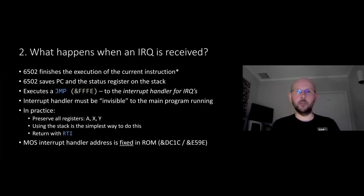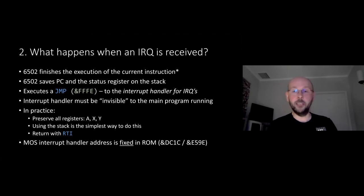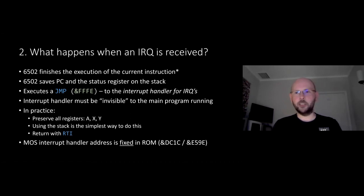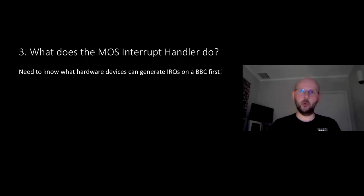FFFE is right at the top of the memory map in the MOS ROM, which is fixed. So when an IRQ comes in, the address it jumps to is already fixed. On a Model B this is DC1C, and on the Master it's E59E. You can verify this by firing up your emulator, going into the memory map view, and looking at what's at that address. The next question is: what does the MOS interrupt handler actually do? But first we should think about what hardware devices can generate IRQs.